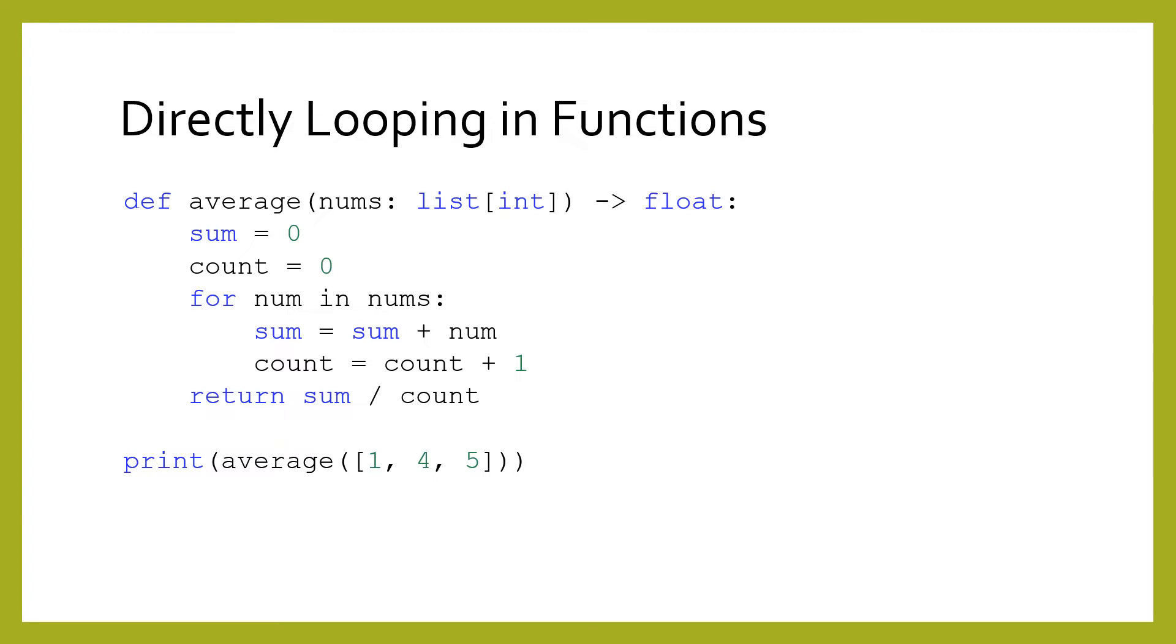You can calculate the mean or average of a list by adding together the elements and dividing by the number of elements. Finding the average is a common operation for a list.